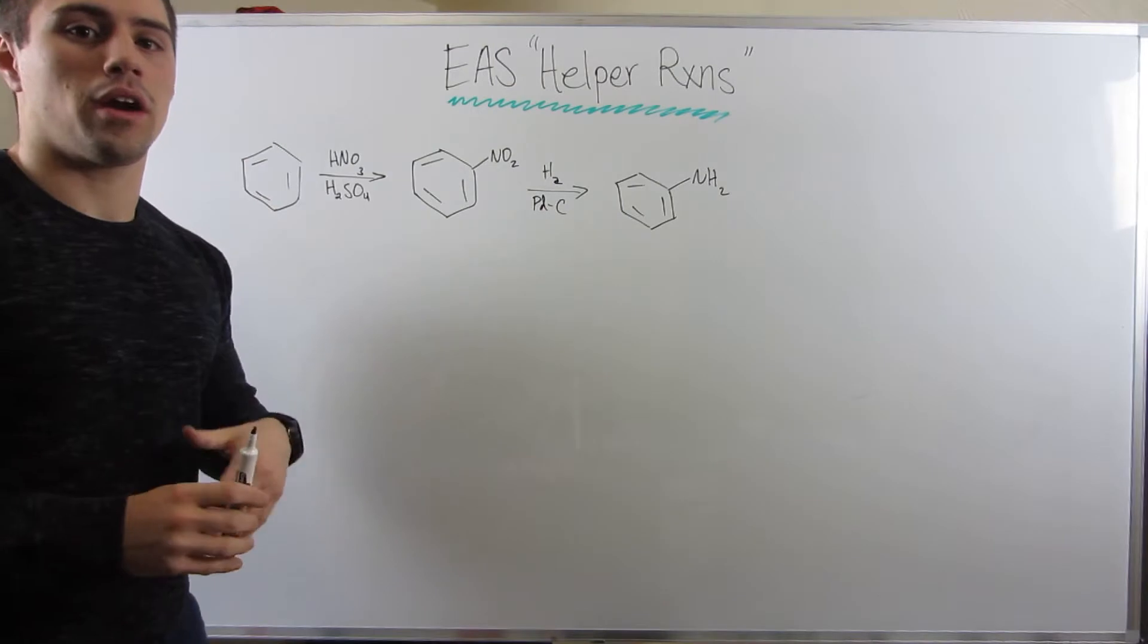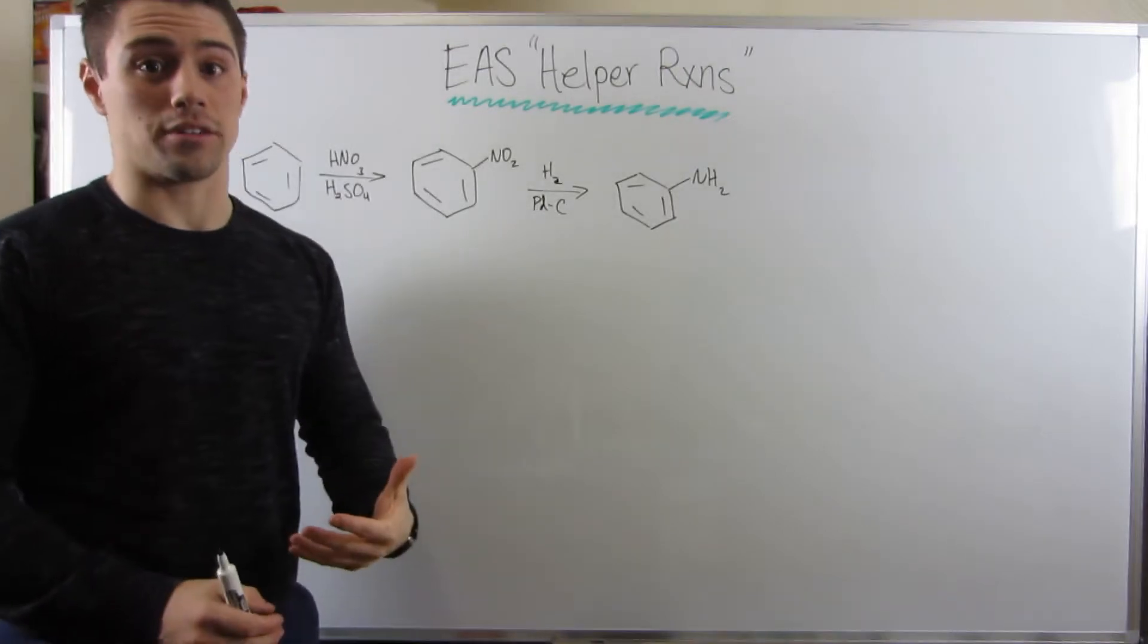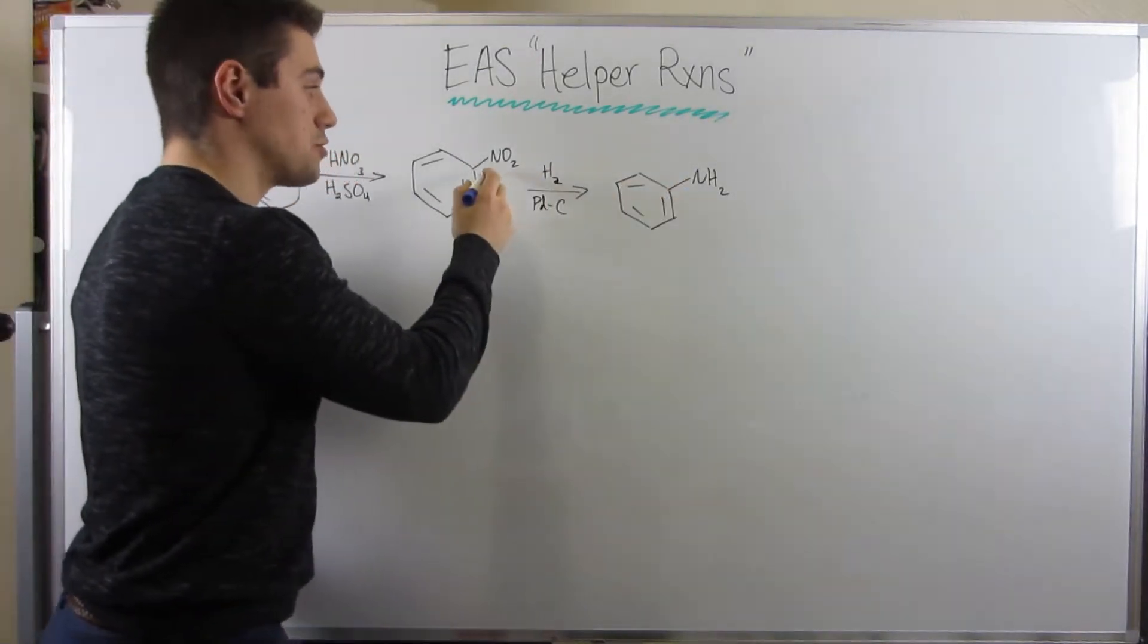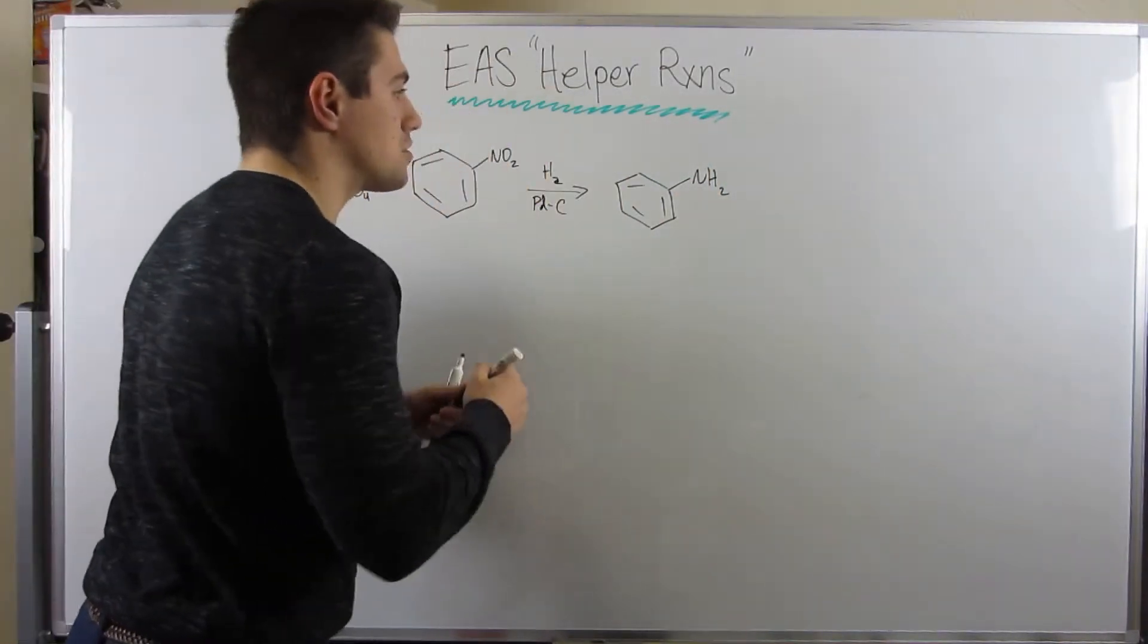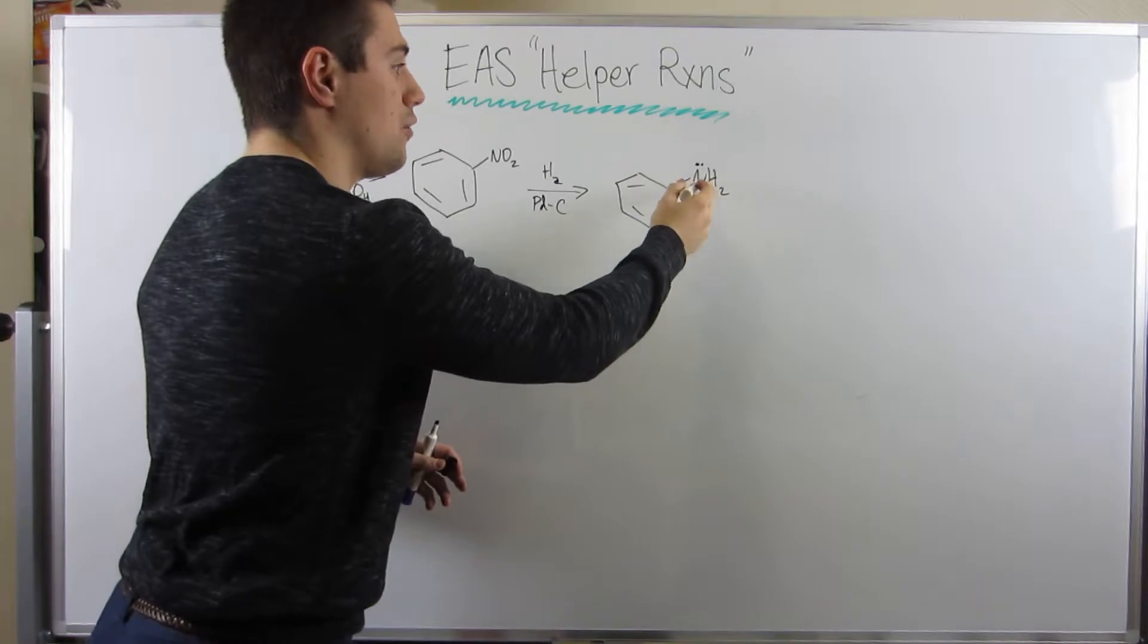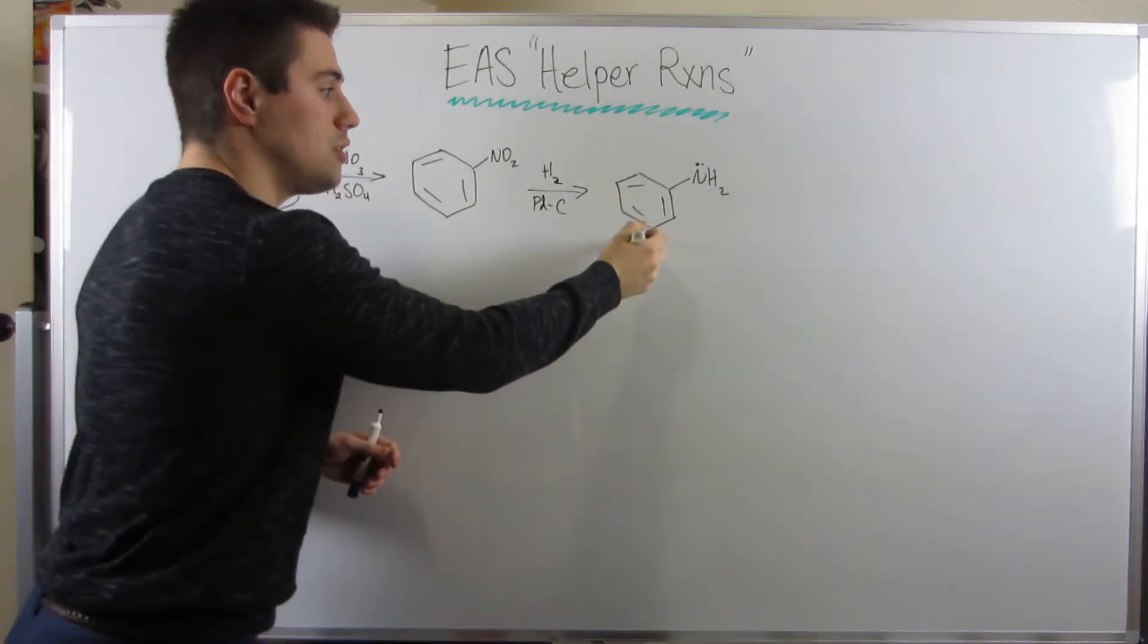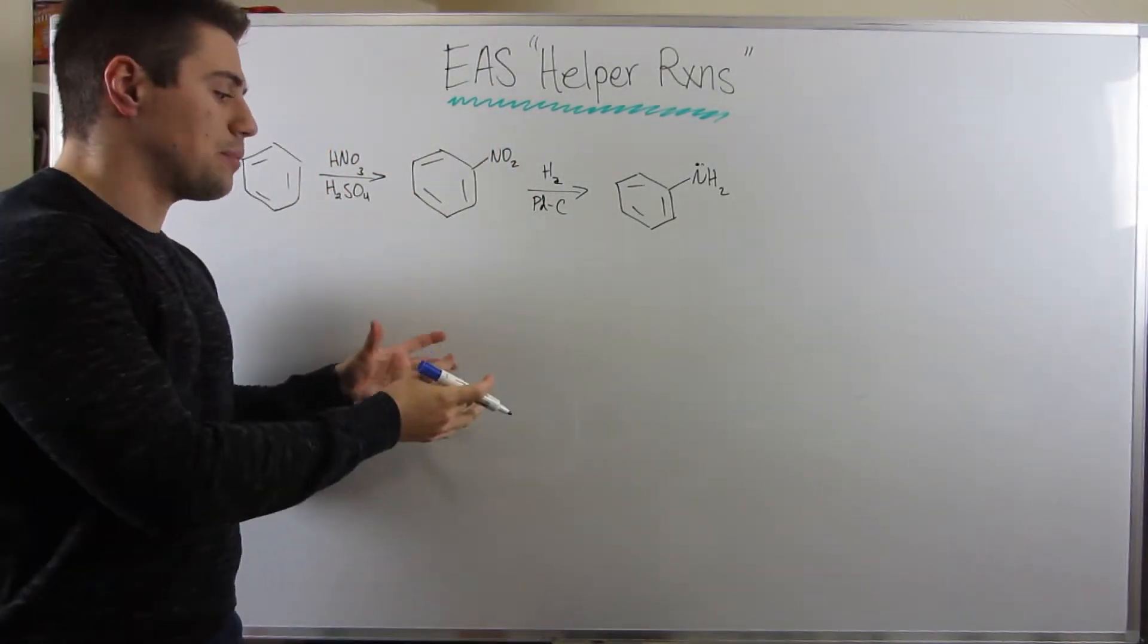Well, maybe you're in a situation where you kind of want a nitrogen group attached to your ring, but you want him to be an orthoparadirector. We need to transform him into an electron donating group. Well, if you throw in some H2PDC, you can reduce your nitro group to an NH2, to an amine. And then if you look more closely, instead of that partial positive nitrogen with no electrons to donate, now you have yourself an electronegative nitrogen attached to no oxygens whatsoever, and he has electrons to donate, so he can pump those into the ring, and now he's an electron donating group, an EDG, as well as an orthoparadirector.